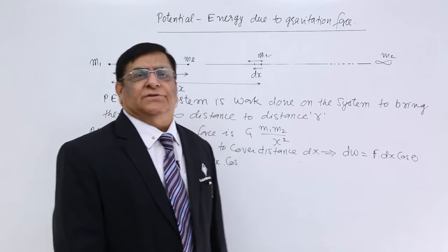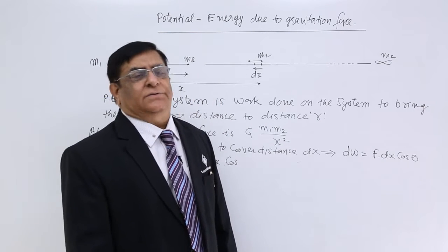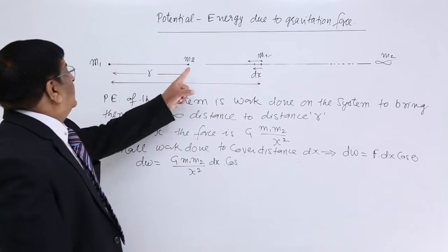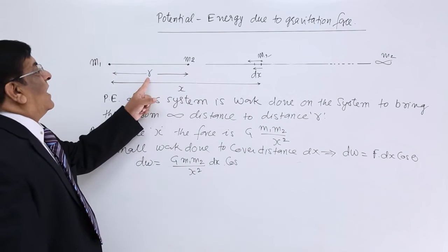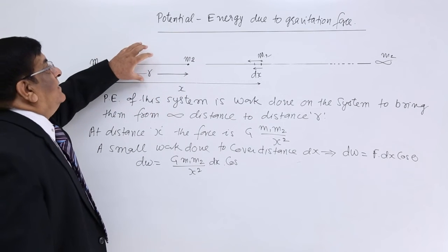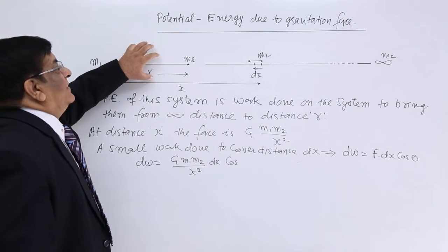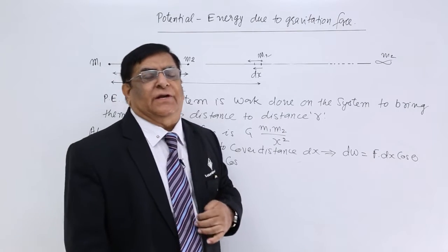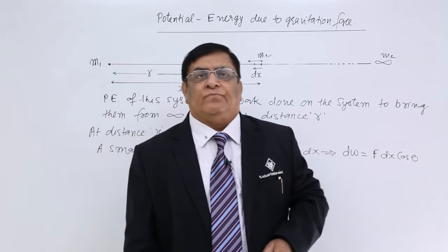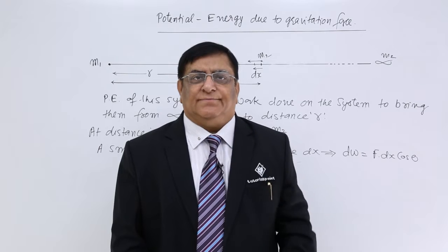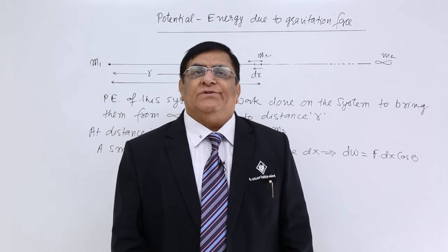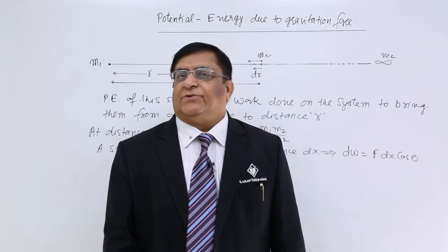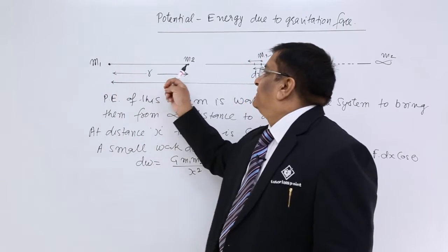We are doing a small calculation to find out that if there are two masses located at a distance r, what is the potential energy of this system? What is meant by potential energy? That is work done. Who is doing the work here? The force which is between the two, that is gravitational force.